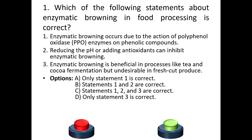Which of the following statements about enzymatic browning in food processing is correct? Statement one: Enzymatic browning occurs due to the action of polyphenol oxidase enzymes on phenolic compounds. Statement two: The pH or adding antioxidants can inhibit enzymatic browning. Statement three: Enzymatic browning is beneficial in processes like tea and cocoa fermentation but undesirable in fresh cut produce. Option A: Only statement one is correct.